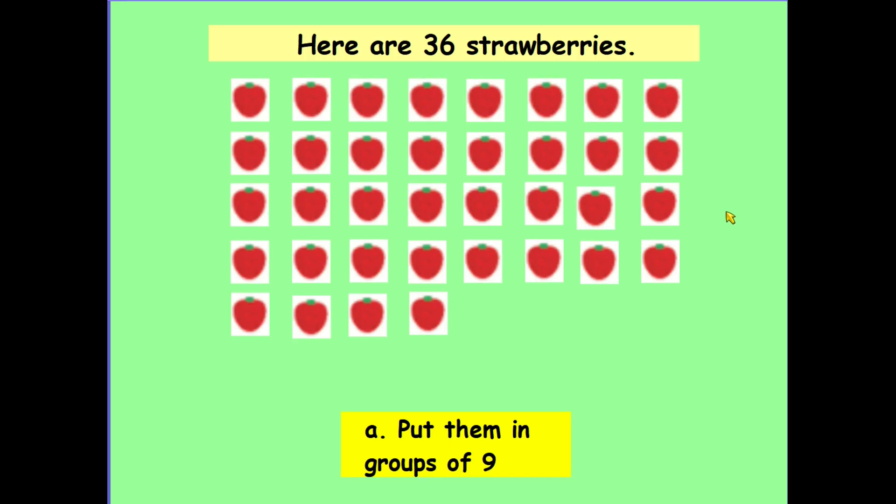Now we're going to look at some questions similar to the ones you'll be solving today. In my first question I have 36 strawberries and I need to put them into groups of nine. If I know my nine times tables I already know how many groups of nine go into 36, but we're going to work it out anyway just to prove that it will be the same. So I'm going to start with my first group of nine down here.